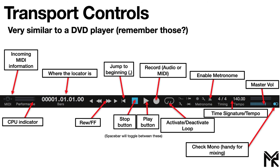Last but not least, you have your CPU indicator, which tells you how much CPU processing your current track is using — when it gets to the edge you'll see it hit red. The top bar is for your CPU and the bottom is your disk monitoring. If you're streaming a lot of samples or using big sample libraries, that can take a toll on your disk, so you may want to store stuff in RAM or consider getting a solid state drive to stream more efficiently.